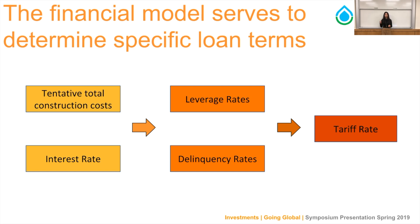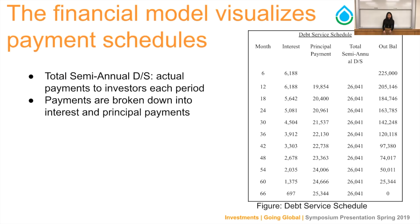The financial model also visualizes payment schedules. Looking at the debt service schedule, it shows how much money is being paid to investors. The total semi-annual column shows the semi-annual payment to investors, which is funneled toward paying back interest payments as well as the principal — the money that was loaned.